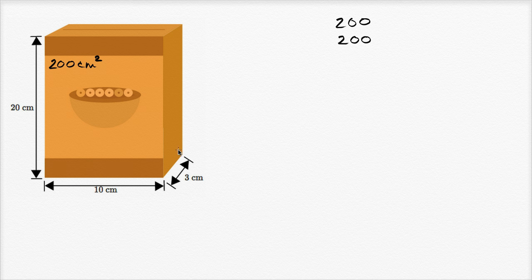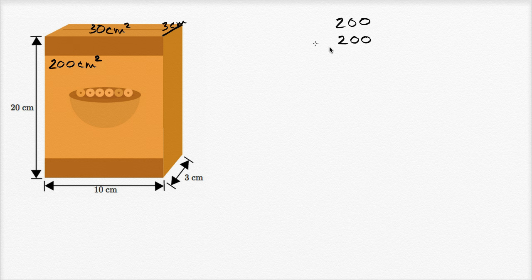Now let's figure out the area of the top of the box. The box is three centimeters deep and 10 centimeters wide, so the top of the box is three centimeters times 10 centimeters, which is 30 square centimeters of area. The bottom of the box is going to have the exact same area — we just can't see it right now — so that's another 30 square centimeters.